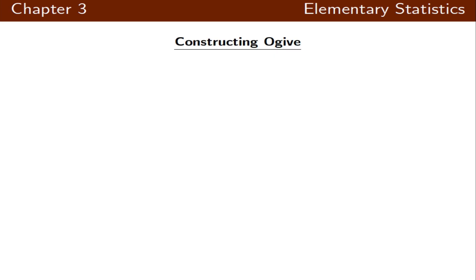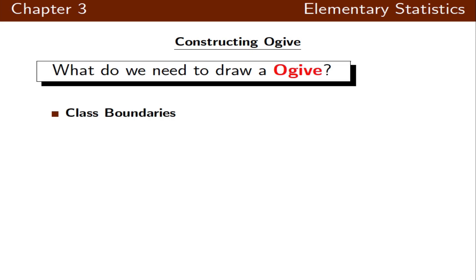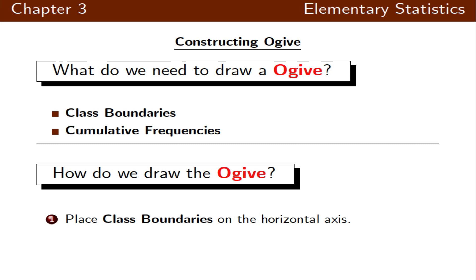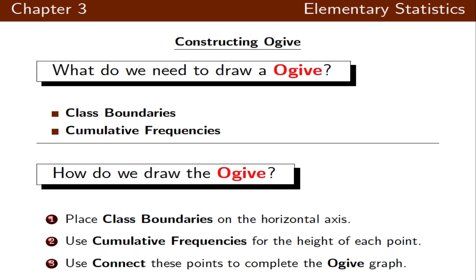Our next graph would be ogive. For ogive we need class boundaries and cumulative frequencies. We place the class boundaries on the horizontal axis and use the cumulative frequencies for the height of each point. Then we use a straight line to connect these points to complete the ogive graph.